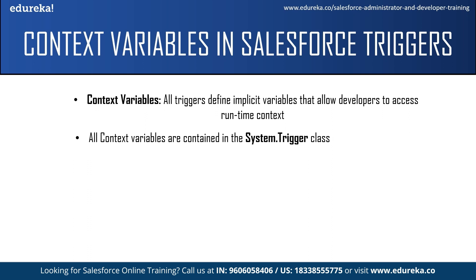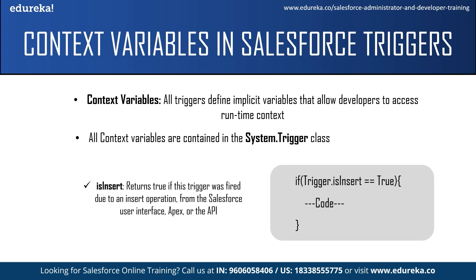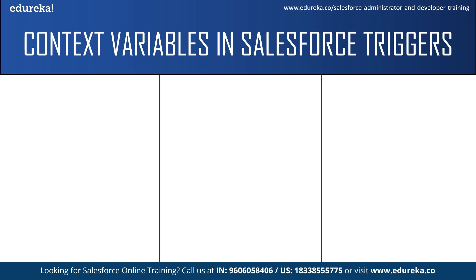The first context variable is isInsert — this returns true if the trigger was fired due to an insert operation from the Salesforce UI, Apex, or the APIs. For example: if Trigger.isInsert == true, only then will the set of code be executed. It checks for a condition and only if true will the code execute. The next context variable is isUpdate, which returns true if the trigger was fired due to an update operation.